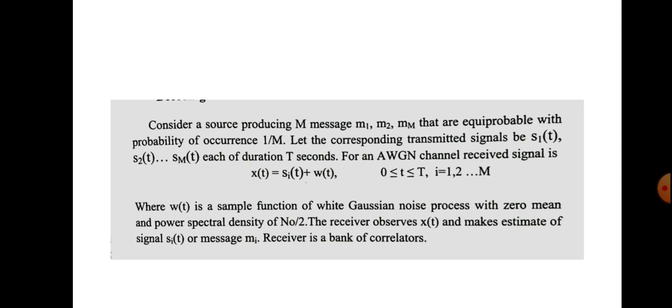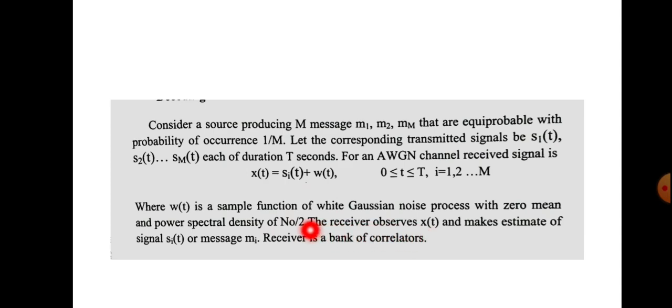W(t) is a white Gaussian noise process with mean equal to 0 and power spectral density N0 by 2. On the receiver side, we perform decoding to detect which signal was transmitted.